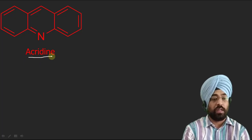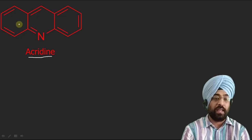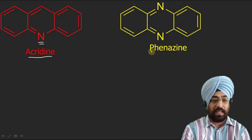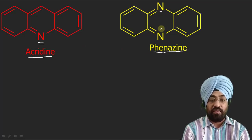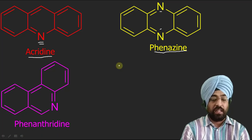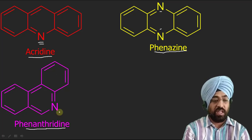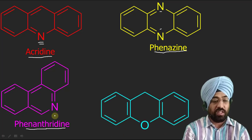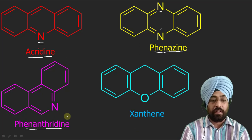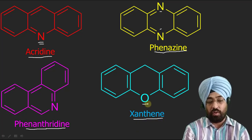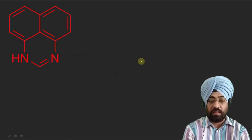Now this compound is called acridine — its trivial name is acridine. Again three six-membered rings are fused with one another and the heteroatom is nitrogen. This compound is called phenazine, in which we have two nitrogens — acridine had only one nitrogen. So phenazine. This is another isomer also called phenazine. Another possibility of fusing three six-membered rings also containing nitrogen gives another phenazine isomer. This compound is called xanthene — three six-membered rings fused with oxygen in the middle ring.